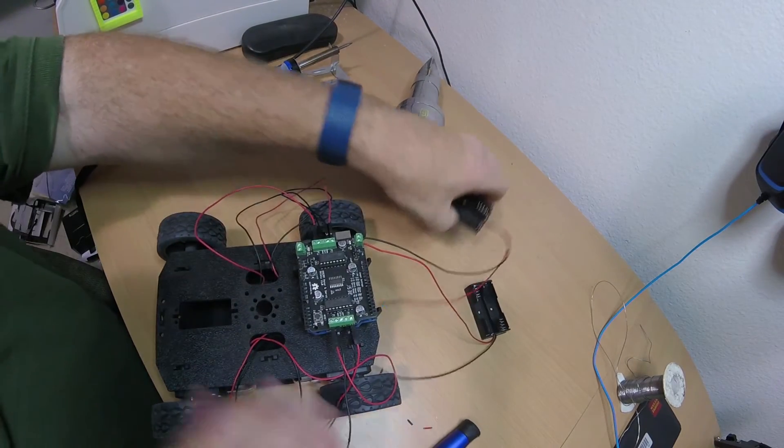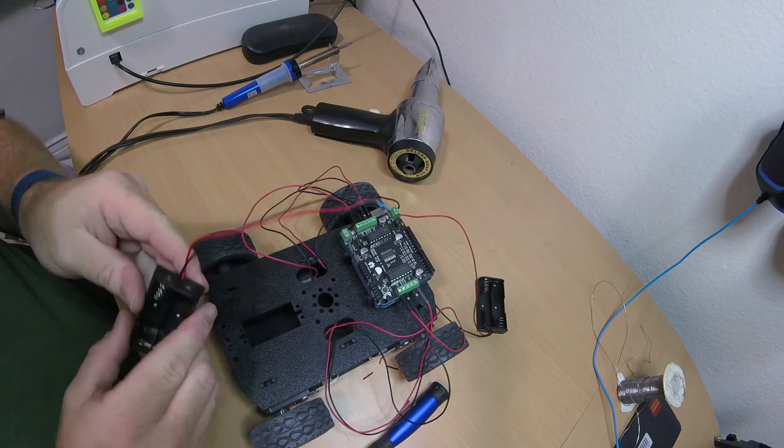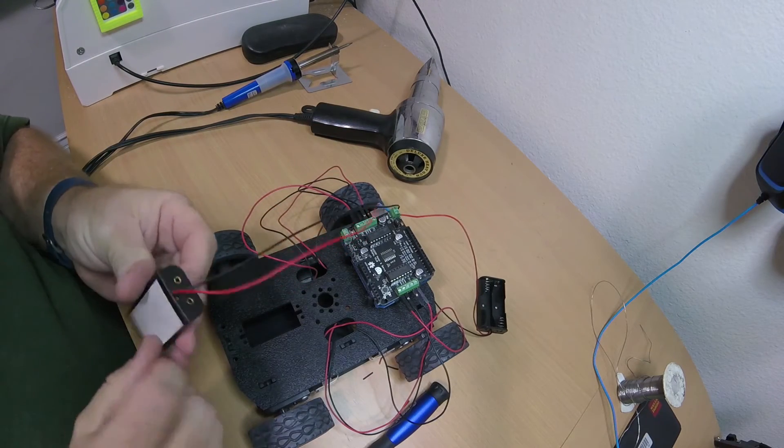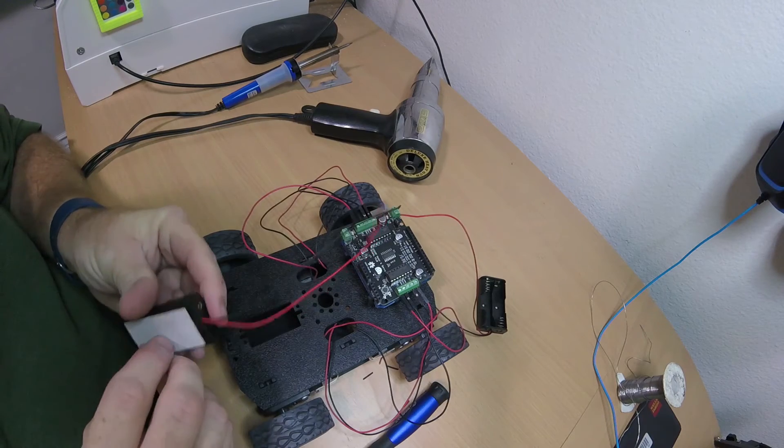Here I'm just going to go ahead and mount the battery packs. This is relatively simple. You just remove the backing from the double sided tape and mount them to the chassis where they'll fit best.